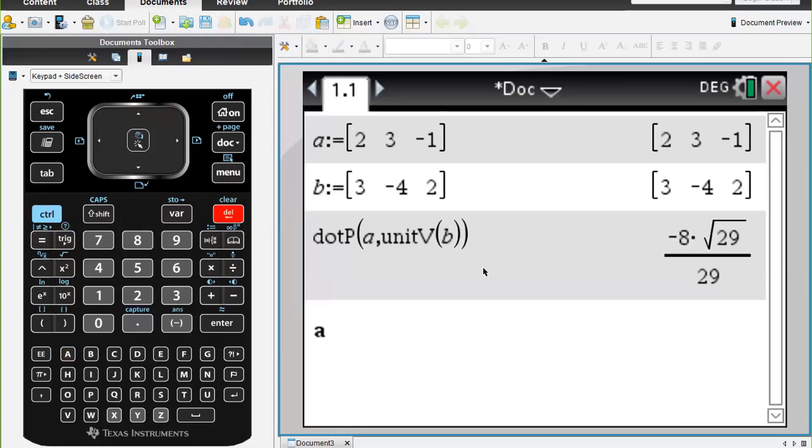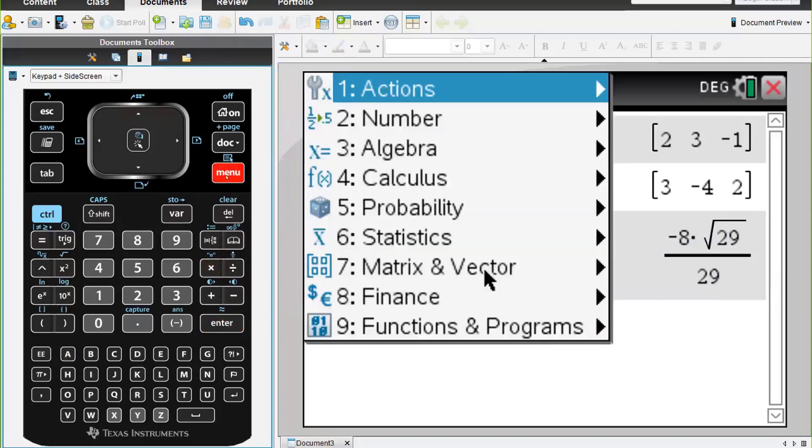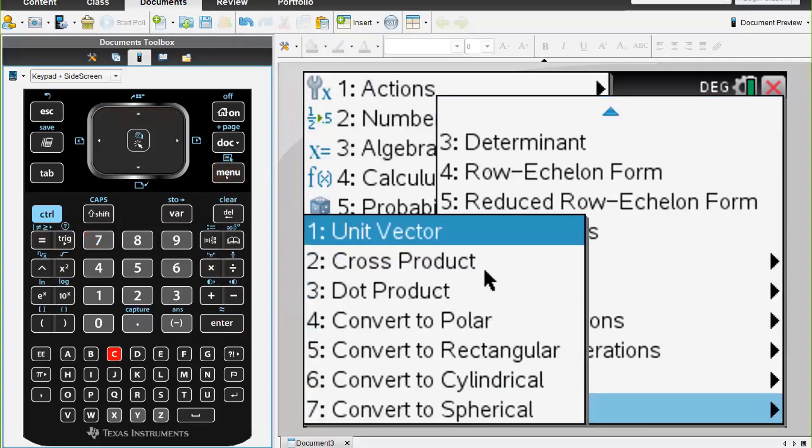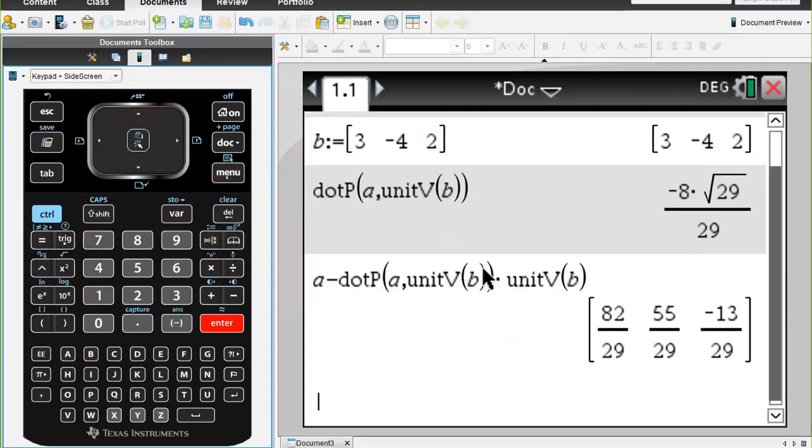I'm going to take vector a and I have to subtract. Now what I can do is go up in the history. So I need to take the dot product of a unit vector b, which is nice quick way of doing it, then we need to multiply that by unit vector b. So menu seven and up arrow c vector and we want one for unit vector and we're going to put in vector b and press enter. So we have to realize here that 82 on 29 is the i component plus 55 on 29 is the j component minus 13 on 29 is the k component of our vector.